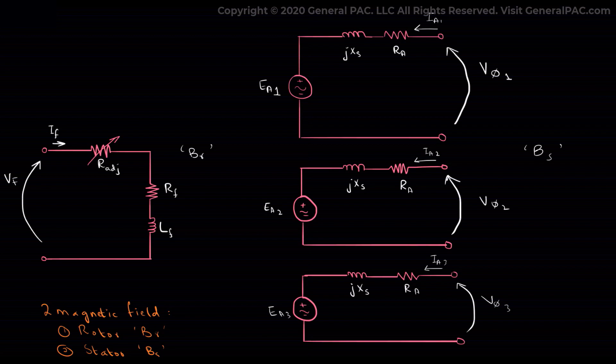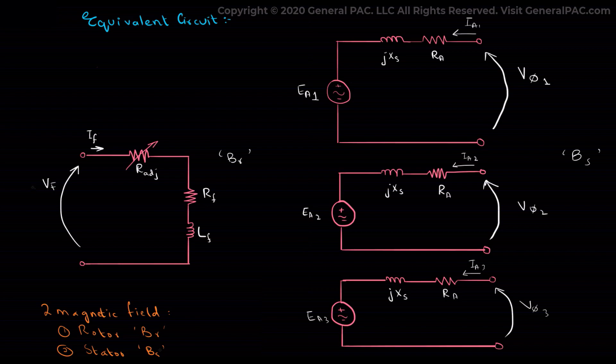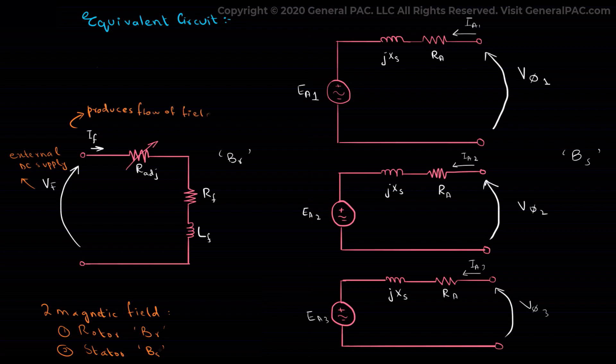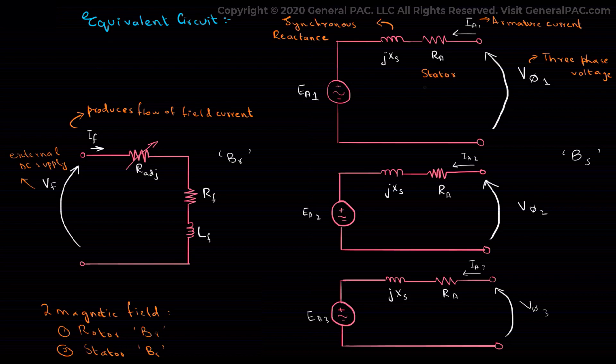Now let's move on to the equivalent circuit of the synchronous motor. In a synchronous motor we have a field exciting circuit where Vf is an external DC supply which in turn produces the flow of field current If. On the stator side we have a three-phase voltage V_phase, an armature current Ia, a synchronous reactance jXs, a stator resistance Ra, and induced EMF Ea for each phase.